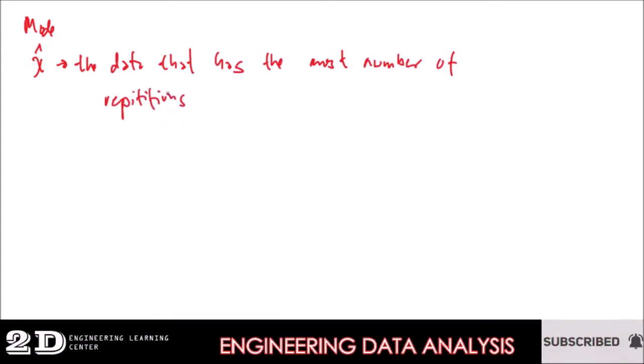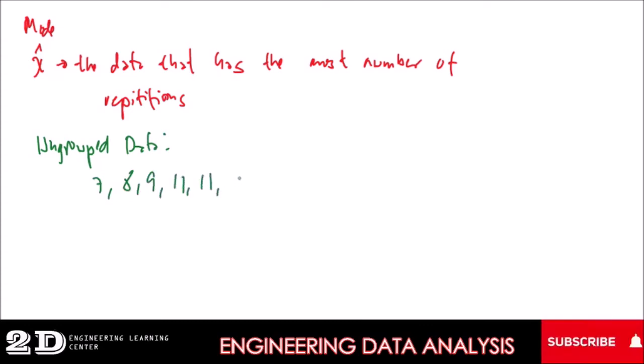Okay, so this is a very easy way to measure the central tendency of a group of data. So if you go to the ungrouped data, for example, we have 7, 8, 9, 12, 12, 14, 16, 16, 19, 22, 22, and 25. So we just find what data or what are the data that is most repeated.